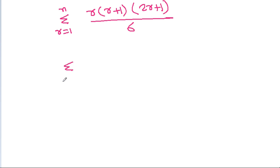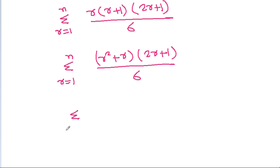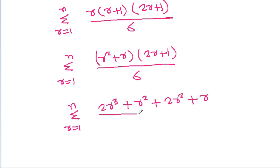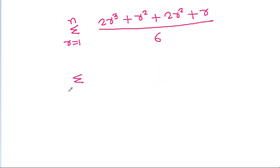It is summation r = 1 to n of r(r+1)(2r+1)/6. Expanding r(r+1) as r² + r, multiplied by (2r+1)/6, gives: r²·2r + r²·1 + r·2r + r·1, which simplifies to 2r³ + r² + 2r² + r. Combined, it is summation of 2r³ + 3r² + r, all divided by 6.